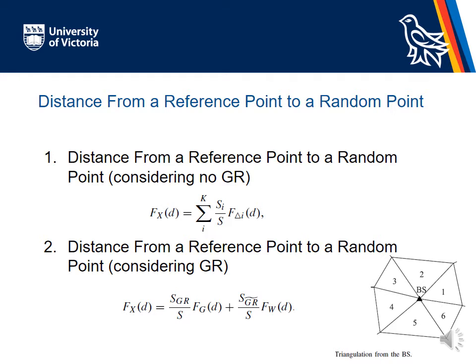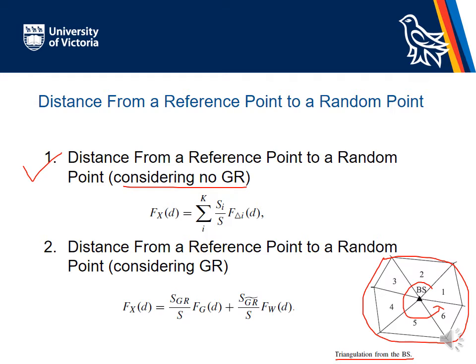To calculate the distance from a reference point to a random point, the proposed model uses a method known as triangulation. The cellular cell is taken and divided into multiple triangular pieces — for example, six pieces in this particular cell. This concept is then used to calculate the distance. For the first equation, considering no guard region, the distance distribution can be calculated using a specific formula.